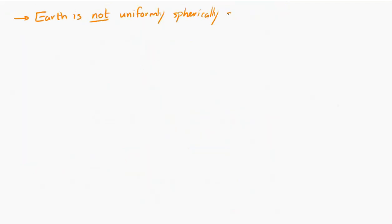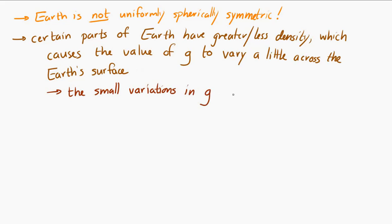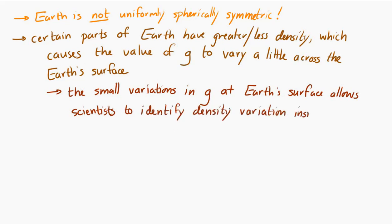But it's also important that the Earth is not uniformly spherically symmetric. Certain parts of the Earth have a greater density than other parts of the Earth. And in fact, this causes the value of the gravitational field to be a little different in some places around the Earth than in other places around the Earth. And these changes in the gravitational field strength around the surface of the Earth allows scientists to figure out areas where there's a greater density in the Earth over here than there is over here. And that allows scientists to find mineral deposits in the Earth. It's one of the ways that scientists do that, or say, oil and gas deposits.